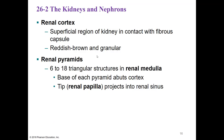The renal cortex is a superficial region of the kidney in contact with the fibrous capsule; it is reddish-brown and granular in appearance. The renal pyramids are easy to identify because they are pyramid-shaped — there are between 6 and 18 triangular structures in the renal medulla. The base of each pyramid abuts or touches the cortex, while the tip, called the renal papilla, projects into the renal sinus. Let's look at a picture to pick out the renal cortex, renal medulla, renal pyramids, and renal papilla.